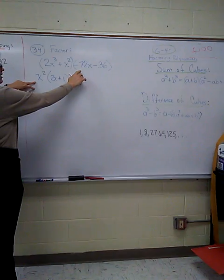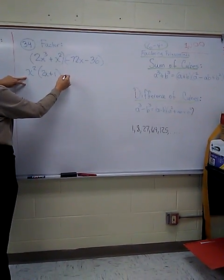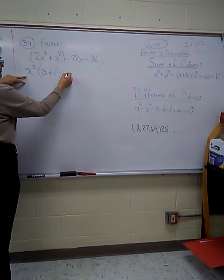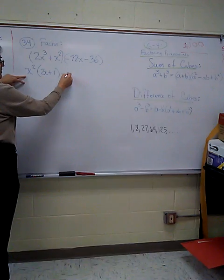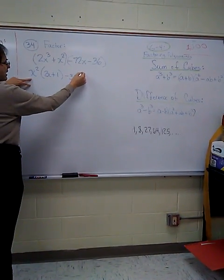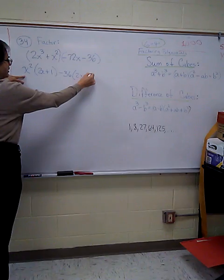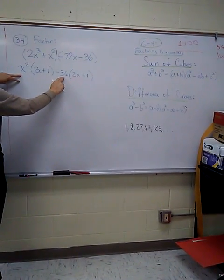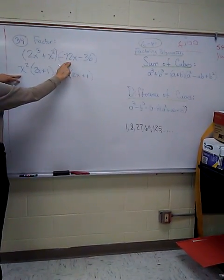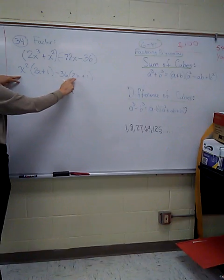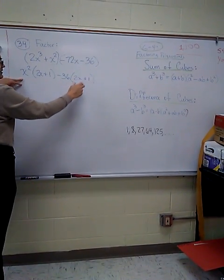And then over here, we've got negative. Maybe we could factor out a negative 36, and we'll be left with 2x plus 1. Just to check, multiply negative 36 times 2x gives you that, and negative 36 times 1 gives you that.